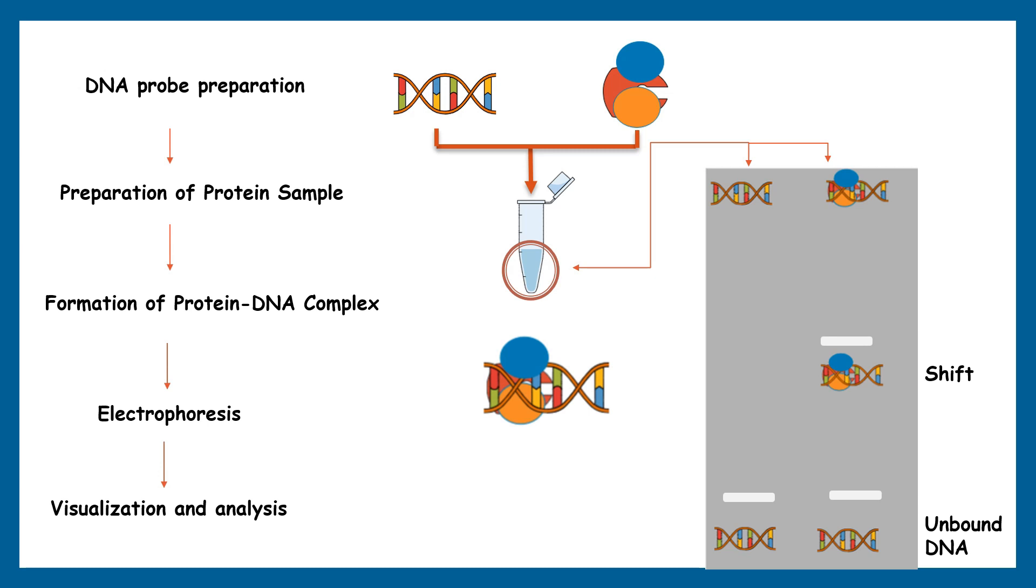After electrophoresis, the gel is stained with a suitable dye like ethidium bromide or Coomassie blue to visualize the DNA bands and protein-DNA complexes.